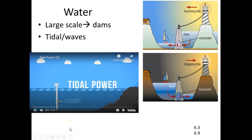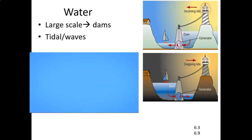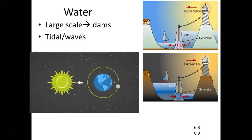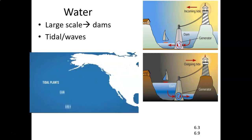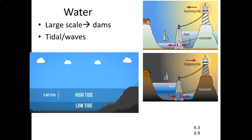Tidal power is a form of hydropower that converts the energy from the natural rise and fall of the tides into electricity. Tides are caused by the combined effects of gravitational forces exerted by the moon, the sun, and the rotation of the earth. Tidal plants can only be installed along coastlines, which often experience two high tides and two low tides daily. The difference in water levels must be at least five meters high to produce electricity.